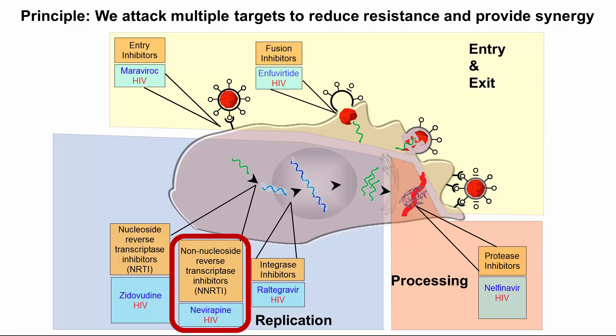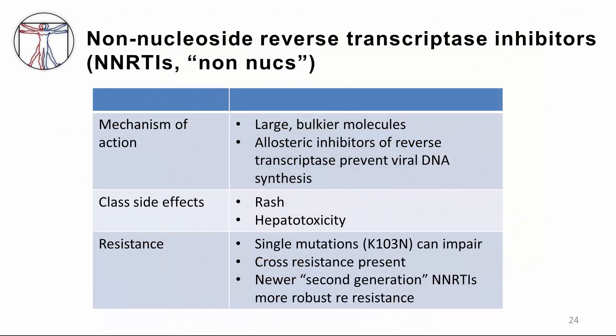Let's now discuss NNRTIs, or non-nucleoside reverse transcriptase inhibitors. NNRTIs work because they are larger, bulkier molecules that are allosteric inhibitors of reverse transcriptase, preventing viral DNA synthesis. Classic side effects across the class include rash and hepatotoxicity. Resistance can occur when single mutations such as K103N — a famous mutation in this class — impair the efficacy of the drugs. Cross-resistance can be present, and newer generation NNRTIs are more robust regarding resistance.